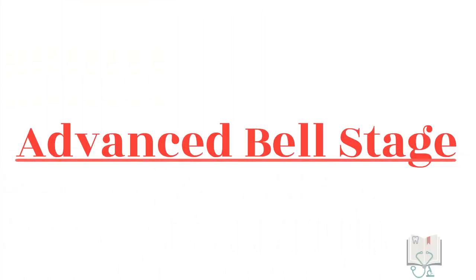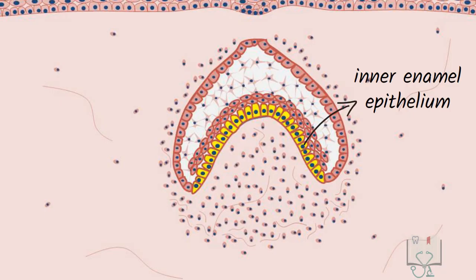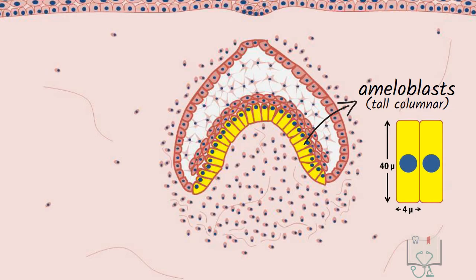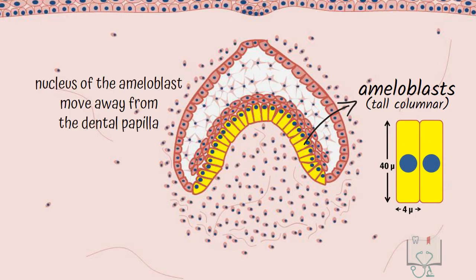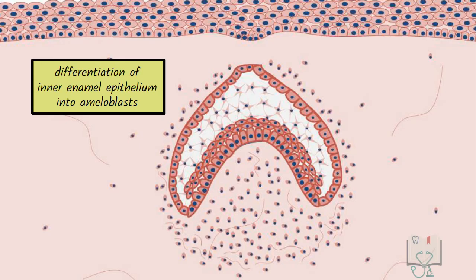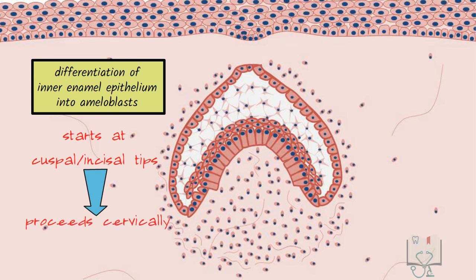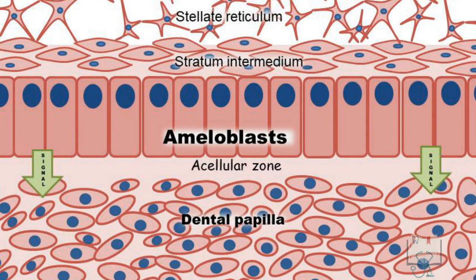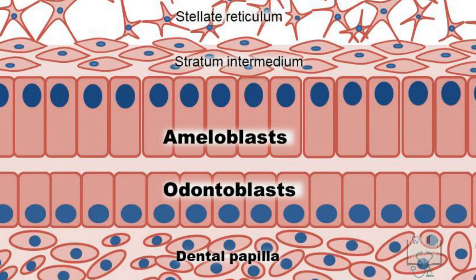In the advanced bell stage, by the end of early bell stage, the cells of the inner enamel epithelium differentiate into ameloblasts. They are tall columnar and are 40 microns high and 4 microns wide. The nucleus shifts away from the dental papilla towards the stellate reticulum — this is called reversal of polarity. The differentiation of inner enamel epithelium into ameloblasts starts at the cuspal or incisal tips and then proceeds cervically. Once inner enamel epithelium differentiates into ameloblasts, they send a signal to the dental papilla, and the ectomesenchymal cells differentiate into tall columnar odontoblasts — the dentine-forming cells.